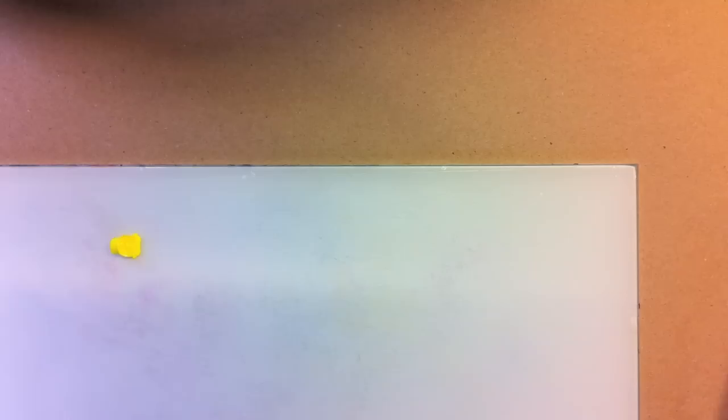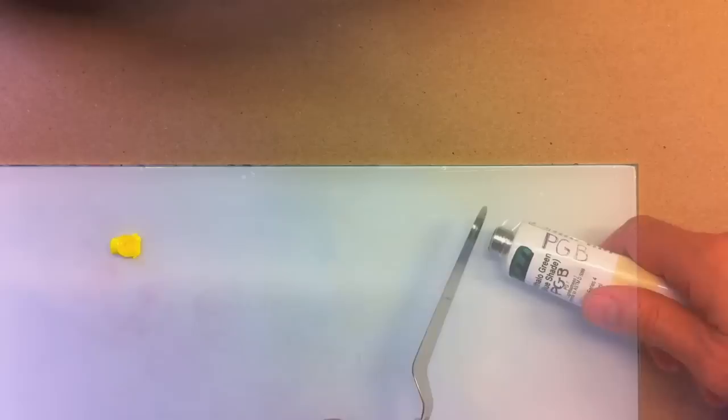Begin by squeezing a little bit of cadmium yellow light onto the palette. Here's a little tip. Each and every time that you squeeze paint out of the tube, make sure you take a rag and wipe the thread clean and especially wipe that flat end clean because that surface is what makes the seal with the cap. If there is any paint dried on that end you will have a leak in your cap and your paint will dry out before you finish using it.